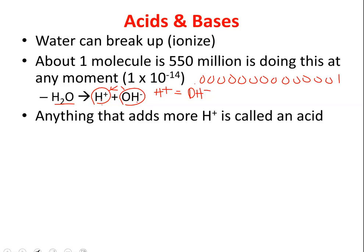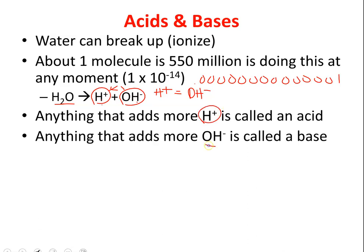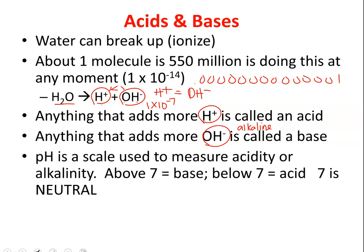Anything that adds more hydrogen ions to water is an acid. Anything that adds more OHs is a base. Normally in water these are balanced — the amount of either one is 1 times 10 to the negative 7th of each. If we add more hydrogens it becomes acidic; if we add more OHs it becomes basic, or alkaline. We can measure how acidic or alkaline something is using a pH scale, and 7 is considered neutral — water has a pH of exactly 7.